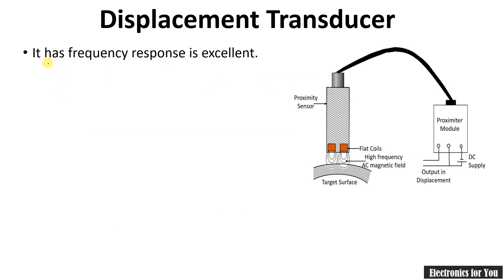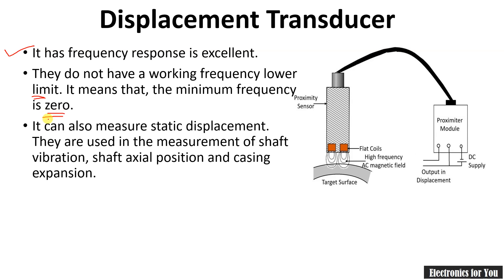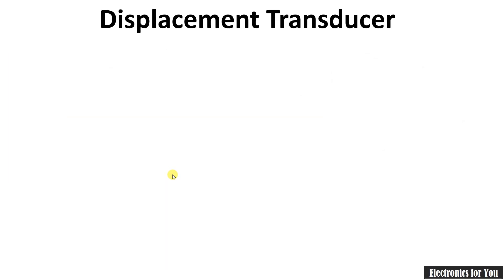The displacement transducer has an excellent frequency response and does not have a lower working frequency limit. It can work at a frequency of 0 hertz, meaning thermal expansion caused by temperature increment can be easily measured. It can also measure static displacement. They are used in the measurement of shaft vibration, shaft axial position, and casing expansion.